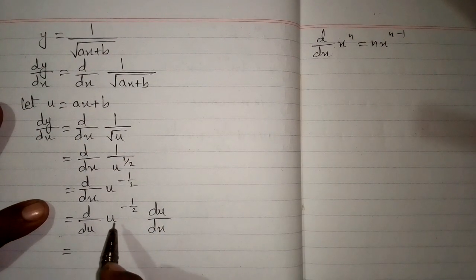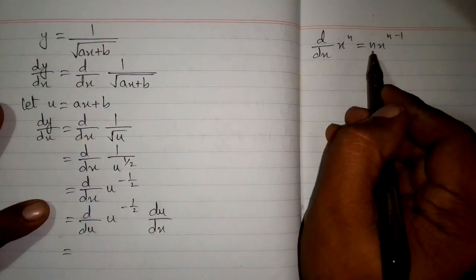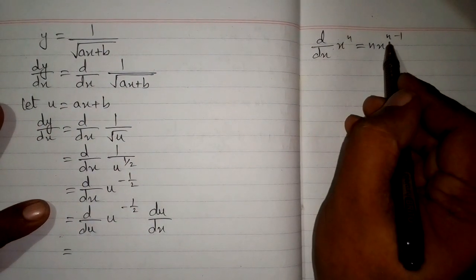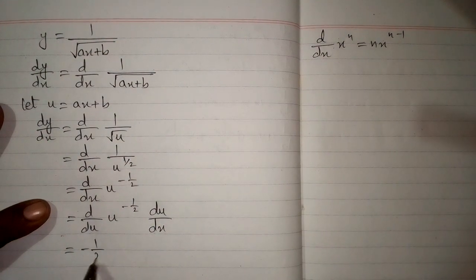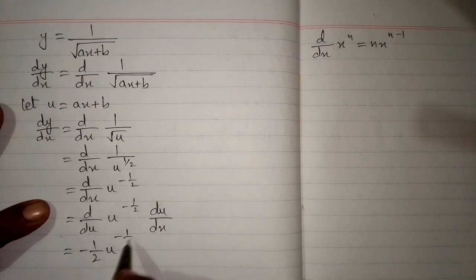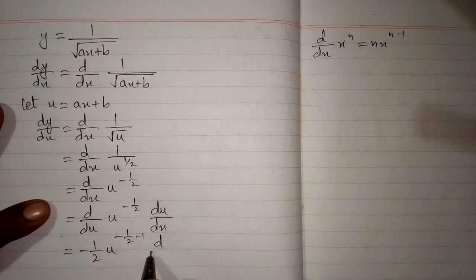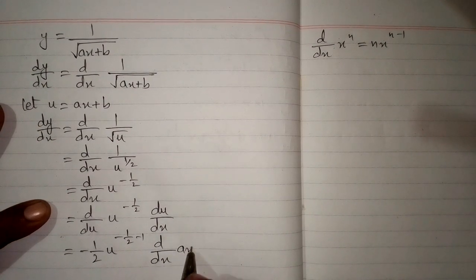We can see that we have minus 1 upon 2 in the case of n. So, we will put minus 1 upon 2 over here and over here. First we will write minus 1 upon 2 times u to the power minus 1 upon 2 minus 1, multiplied by the derivative of u, and u is ax plus b.